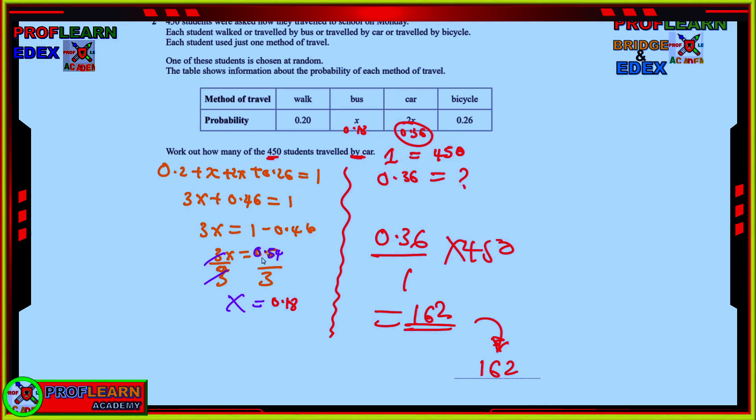Then, in that way, we are able to find the value of x. But, because we are working out how many students travel by car, we are going to say 0.18 times 2 so that we get 0.36 because this was 2x. Then, we can say 1 is equal to 250 students. What about 0.36? Cross multiply and you get the answer in that case to be 90.